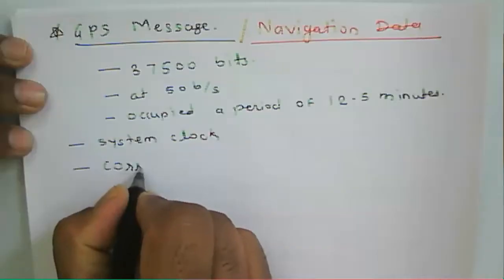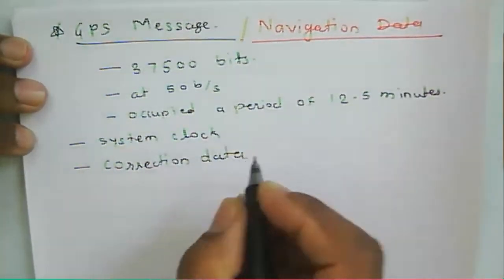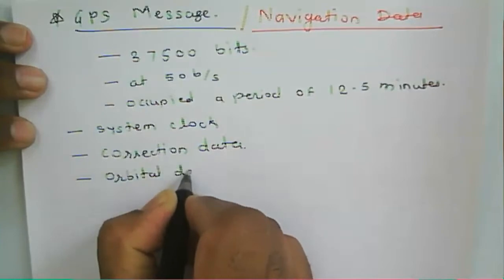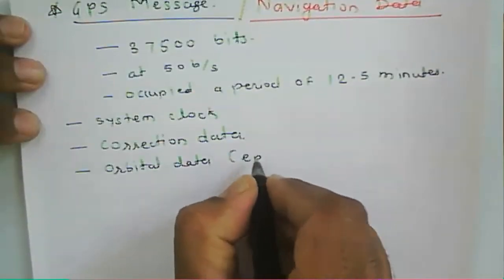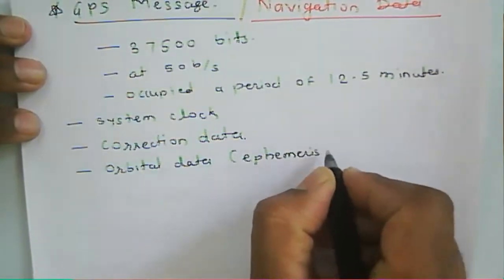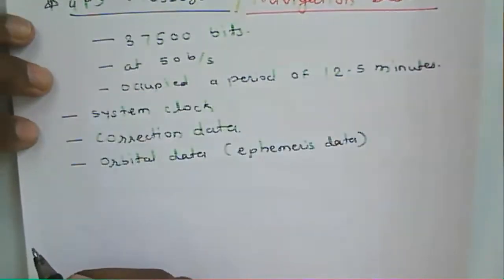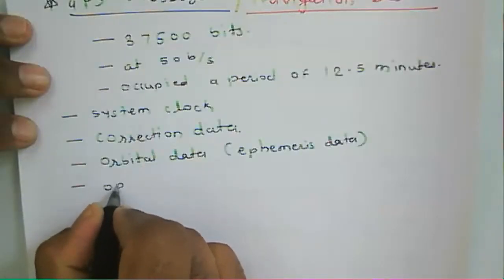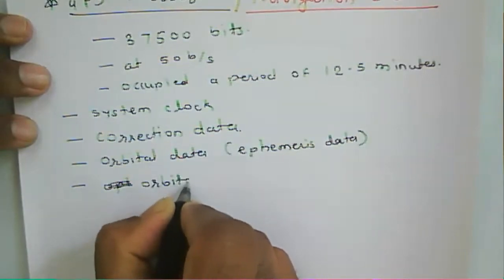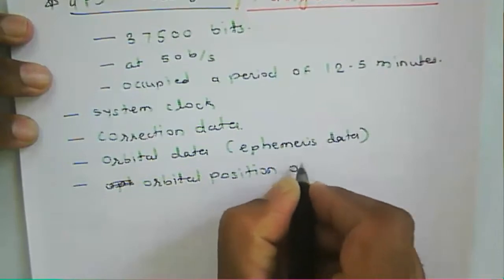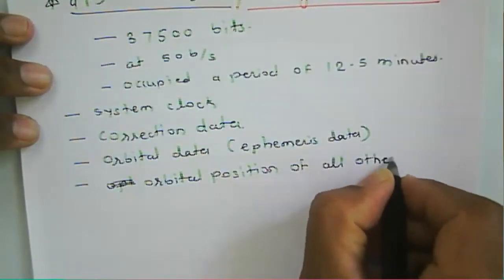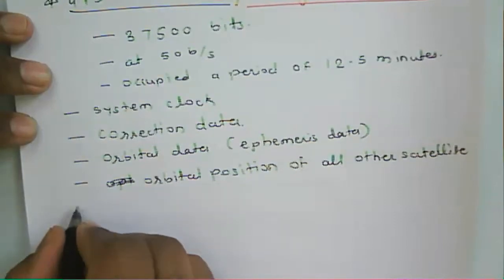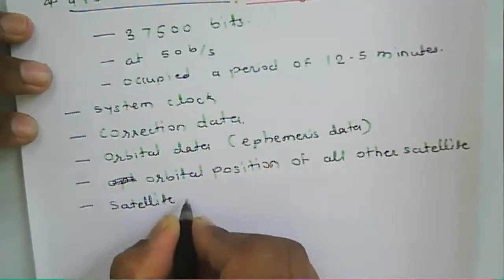This message contains a system clock, then correction data, then orbital data. It also contains ephemeris data — the orbital position of all other satellites — and satellite telemetry data.